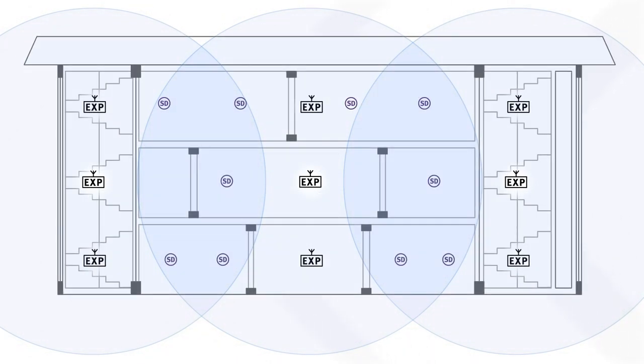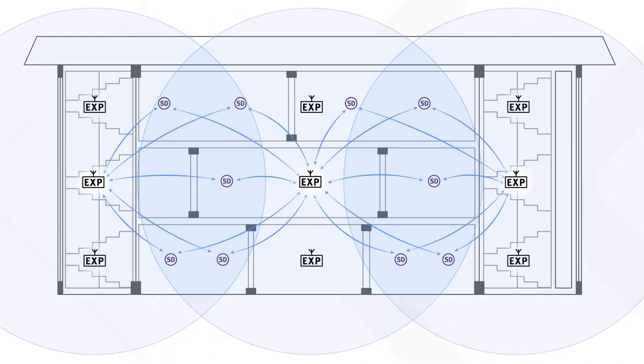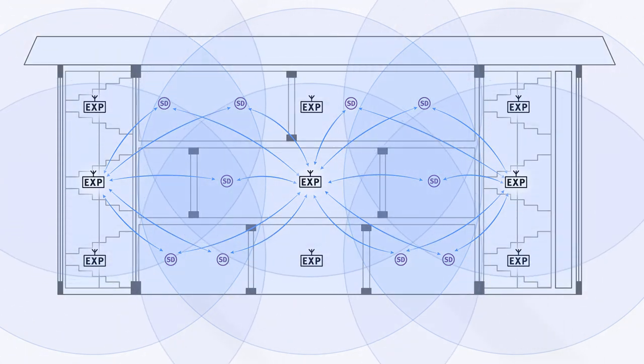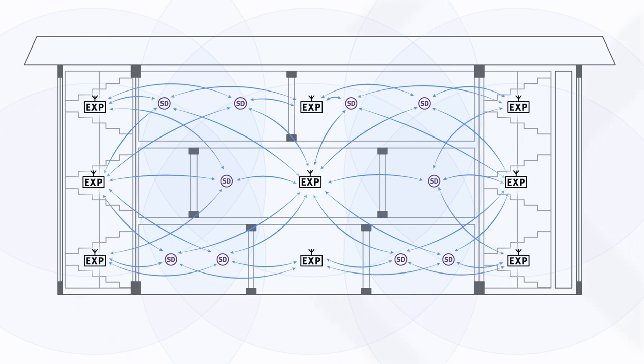It's also important to note that the antenna pattern of an expander is spherical, which means that it can connect to devices one floor below or above it. Since there is a lot of overlap in communication areas of the expanders, most devices in the building have multiple backup connections to the network.